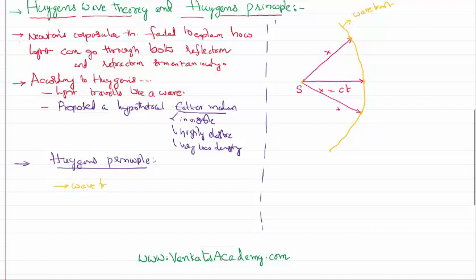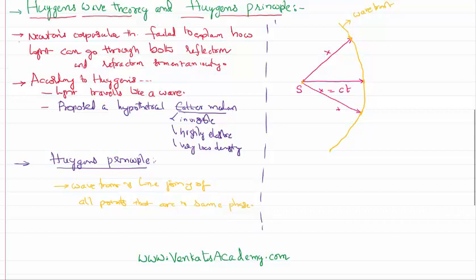So a wavefront is the locus of all the points that are in the same phase. People sometimes ask: if two points on a wavefront are separated by a distance of 10 centimeters, what is the phase difference between them? It is zero, because wavefront means whatever their physical separation, they are all in the same phase.